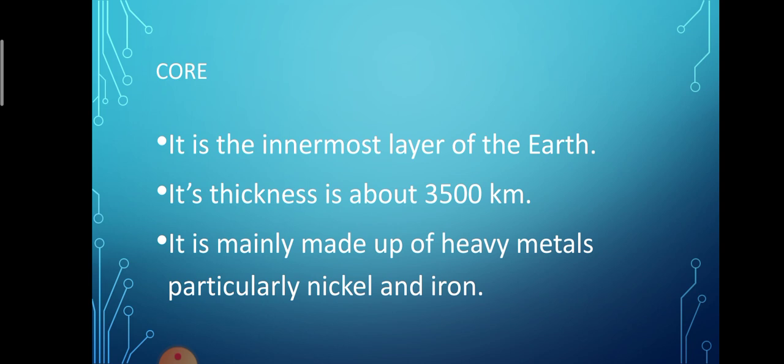The earth's innermost layer is known as core, also known as barysphere. This layer has a thickness of about 3500 km. It is mainly made up of heavy metals, particularly nickel and iron, and is also known as nife because of the presence of nickel and iron. The boundary which separates the mantle and the core is known as the Gutenberg discontinuity.